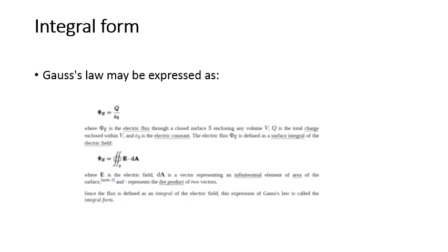We have shown the integral form and differential form. Generally, Gauss law states that flux phi equals charge enclosed by a surface divided by epsilon zero — that is, phi equals Q over epsilon zero. Here phi is the electric flux through a closed surface S, which is the Gaussian loop that we have chosen enclosing any volume V. Q is the total charge enclosed within V, and epsilon zero is the electric constant.